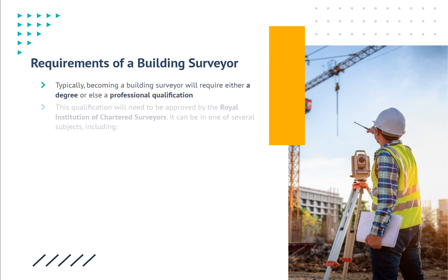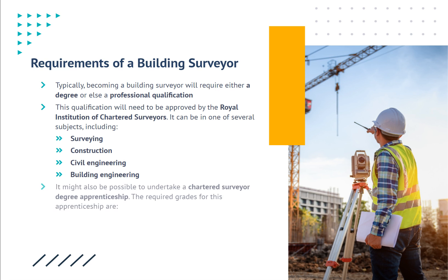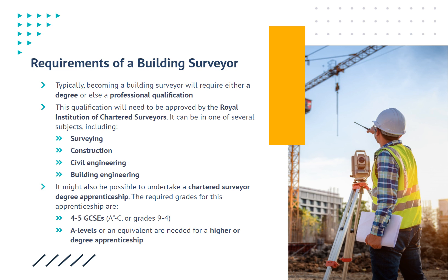Requirements of a building surveyor. Typically, becoming a building surveyor will require either a degree or a professional qualification approved by the Royal Institution of Chartered Surveyors. It can be in one of several subjects, including Surveying, Construction, Civil Engineering, or Building Engineering. It might also be possible to undertake a Chartered Surveyor degree apprenticeship. The required grades for this apprenticeship are 4–5 GCSEs at grades A–C, or grades 9–4; A-Levels or an equivalent are needed for a higher or degree apprenticeship.